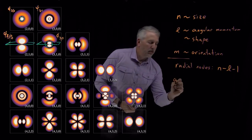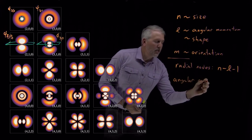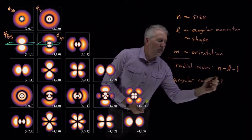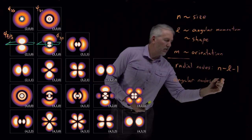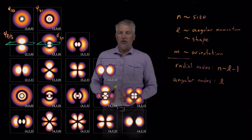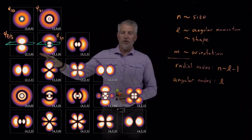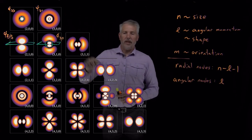And if we want to determine the number of angular nodes, that's a little bit easier. That's just the value of l. So an s orbital where l equals 0 doesn't have any angular nodes. A p orbital like these two where l equals 1 has always one angular node.